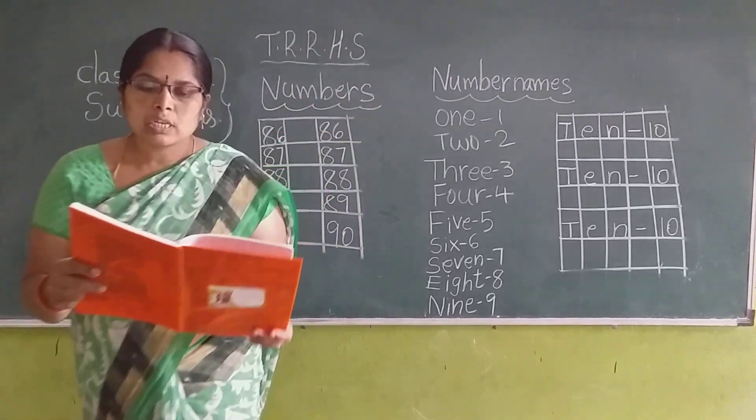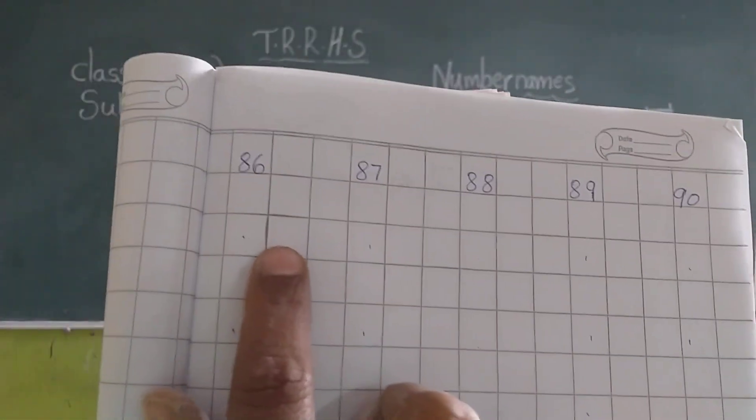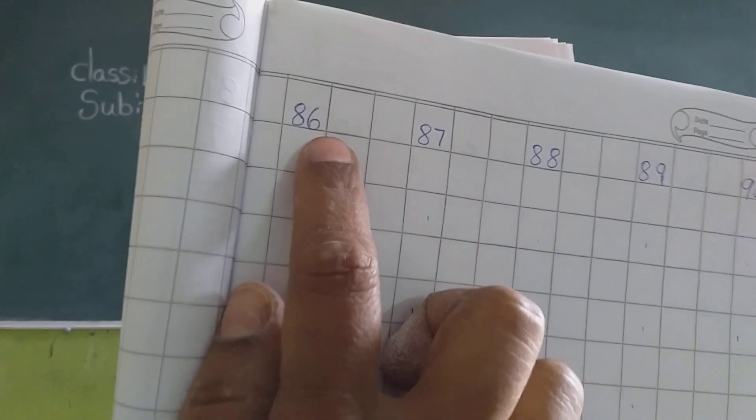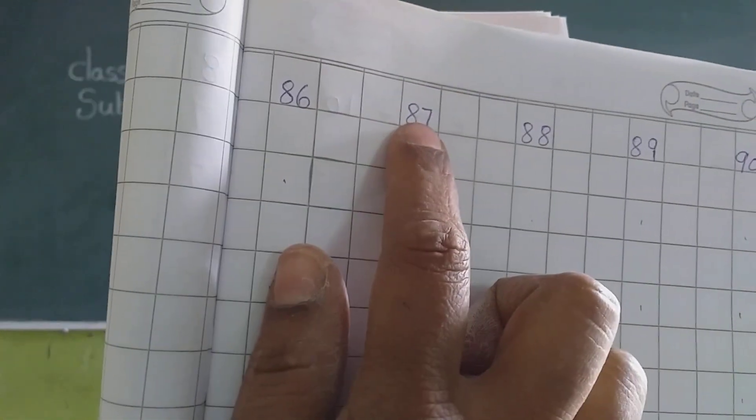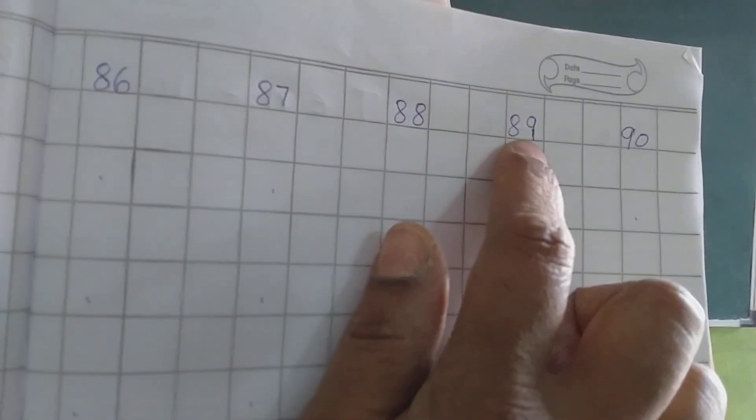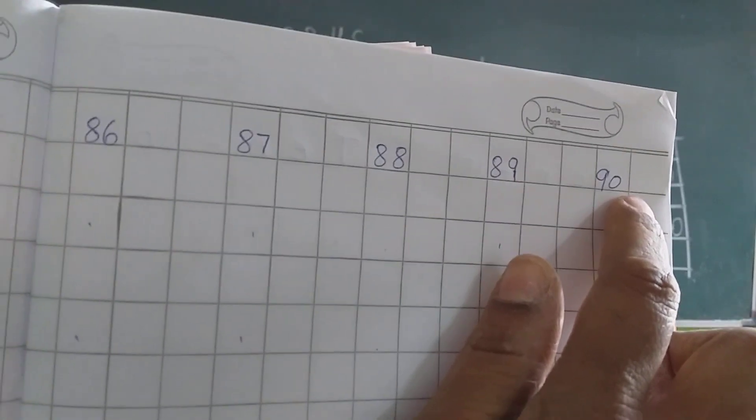Okay children, in your notebooks, how you have to write? In your notebooks, numbers and number names. Look here, I will explain you. First, 8, 6, 86. 8, 7, 87. 8, 8, 88. 8, 9, 89. 9, 0, 90.